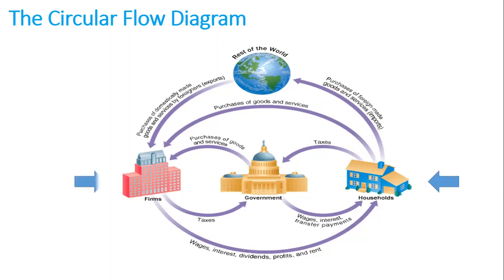The second sector is firms. They receive payments from households and the government for goods and services they produce, and pay wages, dividends, interest, and rents to households, and taxes to the government. The third sector is the government. It receives taxes from firms and households, pays firms and households for goods and services including wages to government workers, and interest and transfer payments to households. Transfer payments are cash payments made by the government to people who do not supply goods, services, or labor in exchange — for example, social security benefits or welfare payments.